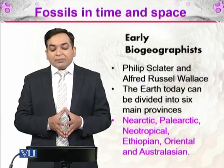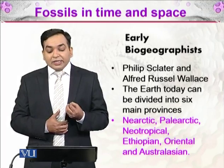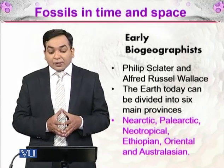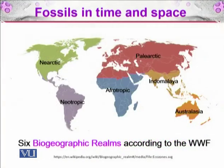Scientists Philip Sclater and Alfred Russell Wallace in the mid-1800s divided the earth into six main biogeographic provinces: Nearctic, Palearctic, Neotropical, Ethiopian, Oriental, and Australasian. The Nearctic is present in North America, Neotropic in South America, Afrotropic covers Africa and parts of the Middle East, Palearctic is composed of Europe and Asia, Indo-Malaya covers India, Thailand, Cambodia, and other regions, and Australasia covers parts of Asia as well as Australia. All of these areas contain their own biogeography and living organisms with their own characteristics.